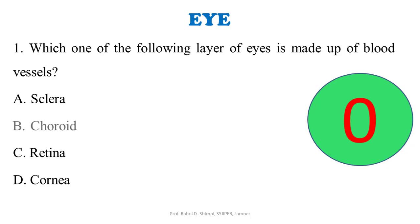The eye is made up of three layers of tissue. The outermost layer is the sclera, made up of fibrous tissue. The middle layer is the choroid, made up of blood vessels as stated in the question. The innermost layer is the retina, made up of nervous tissue, processes, and photoreceptors. The cornea is the anterior continuation of the sclera, so the correct answer is choroid.